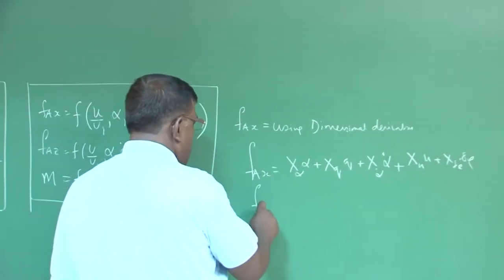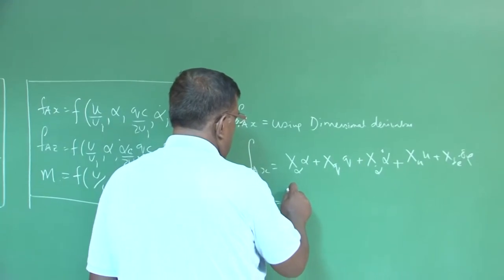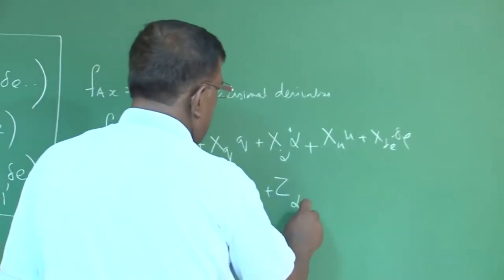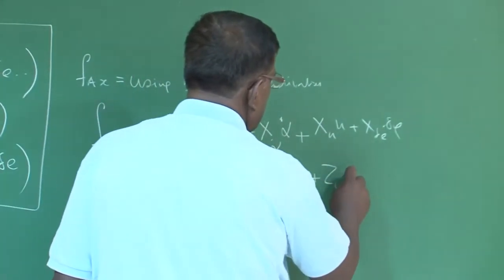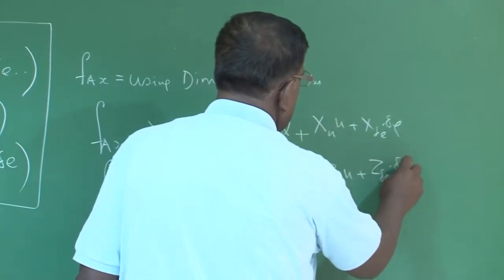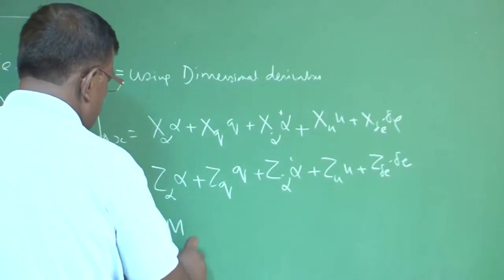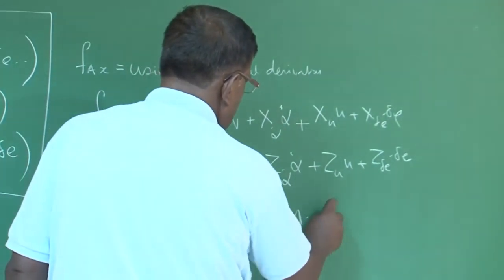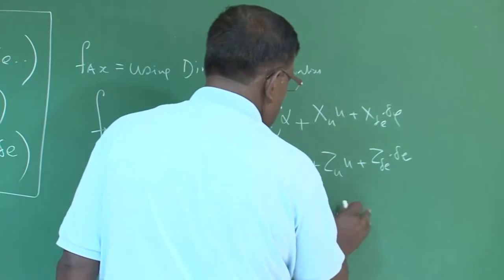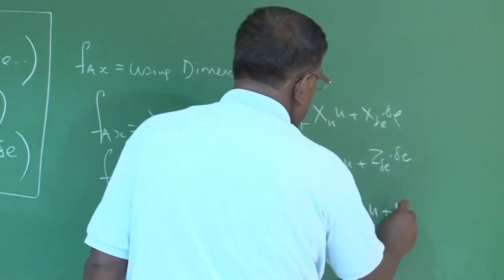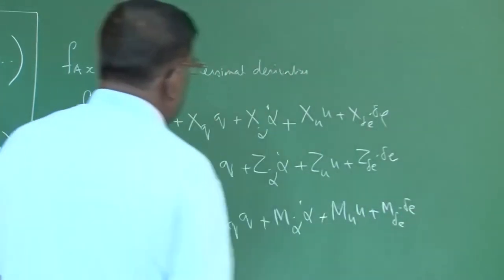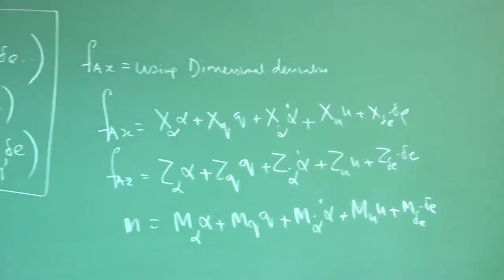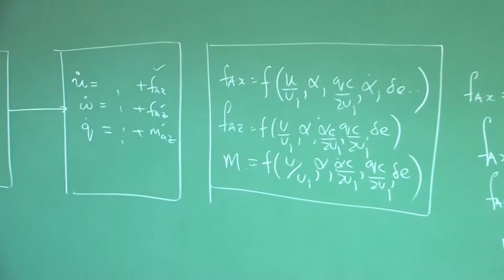Similarly for Faz, we wrote: Zα·α + Zq·q + Zα̇·α̇ + Zu·u + Z_δe·δe. And for M, it is Mα·α + Mq·q + Mα̇·α̇ + Mu·u + M_δe·δe. Then we substituted these expressions into the equations and found a stability matrix.